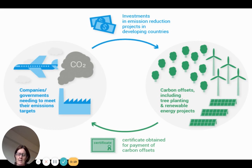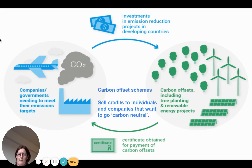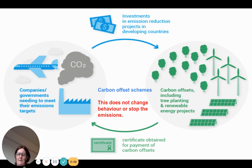Carbon offsetting is something the aviation industry in particular uses — you might see this when purchasing a ticket. It doesn't stop emissions from occurring; instead, it involves investing in projects that absorb and offset those emissions. This is considered a limitation because it doesn't actually change behavior.